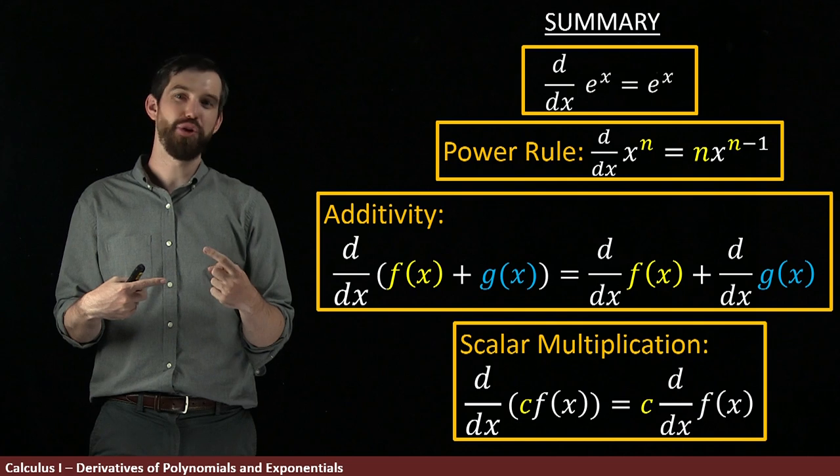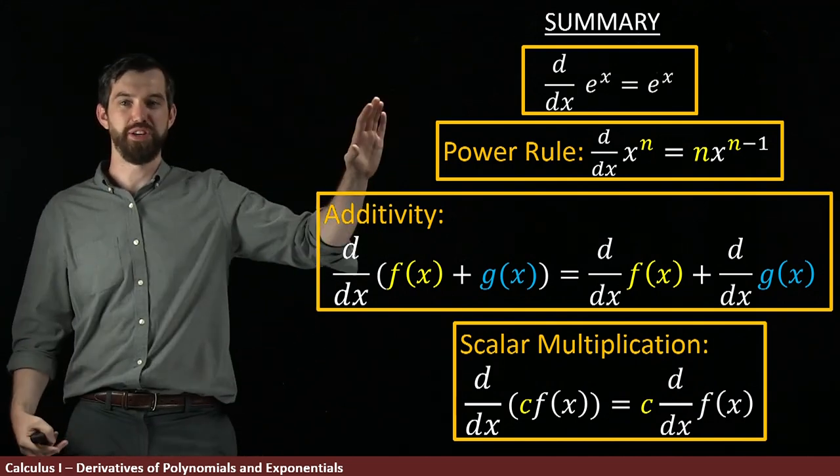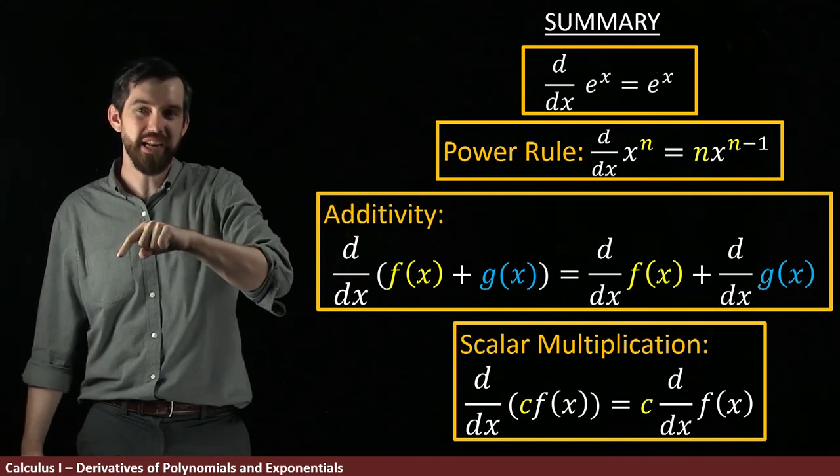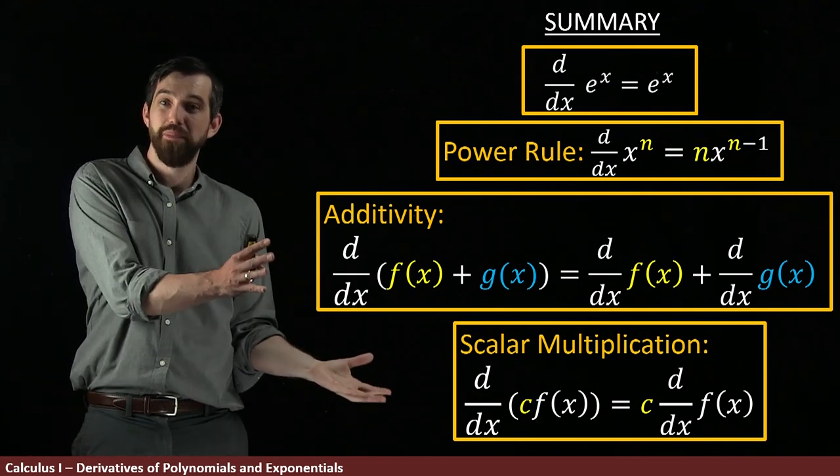For example, I could have a polynomial which is a bunch of power rules, or I could have like e^x plus x squared, and I would be able to combine them by these different rules.